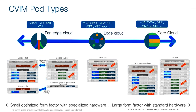With Cisco VIM you have flexibility in deployment models and form factors. From right to left: the traditional full pod has dedicated servers for controllers, storage, and compute, along with a management server that can be virtualized. This is typically found in core data centers with many workloads and sufficient physical space. Moving toward the middle, use cases exist where more smaller pods make sense, typically closer to the edge and to the source of user traffic.